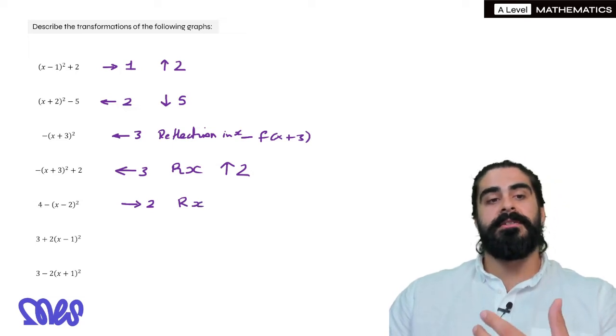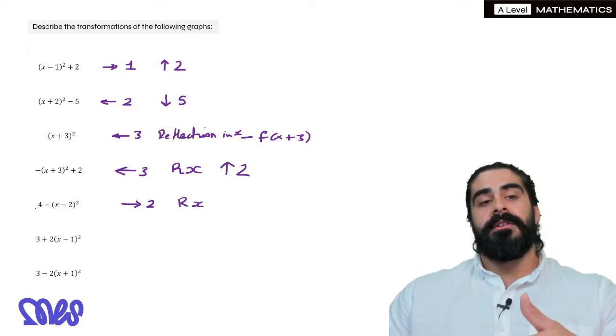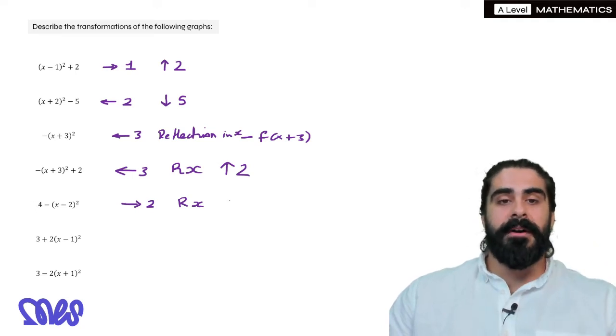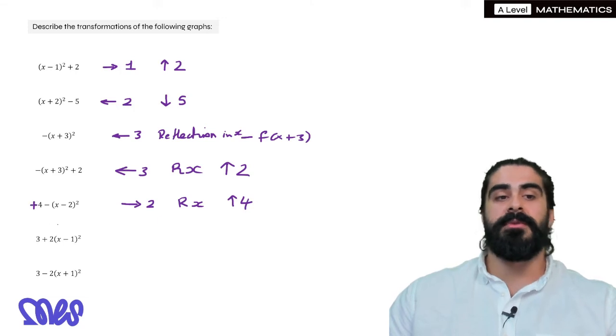So it says 4-(x-2)² but we read the x-2 bit first. So the x-2 is going to shift us to the right by 2. The negative in front reflects in the x-axis. Then this 4 at the end always affects the y values, it's going to shift the graph up by 4.